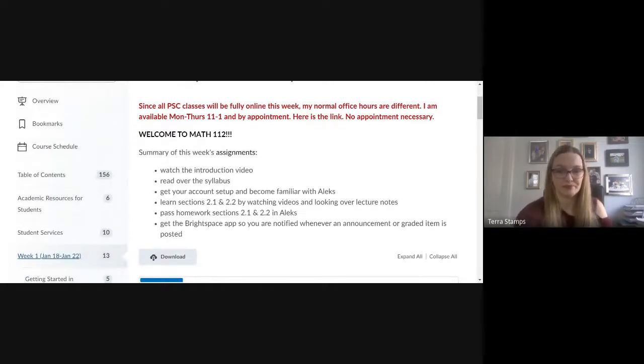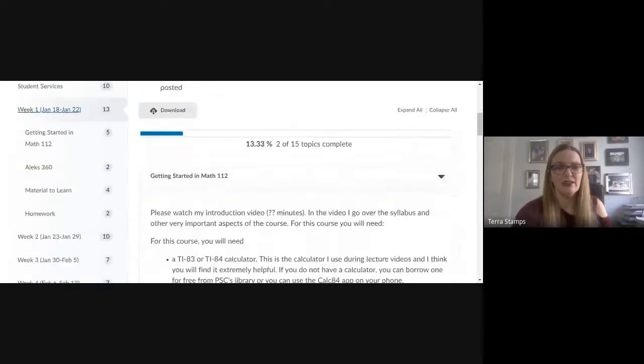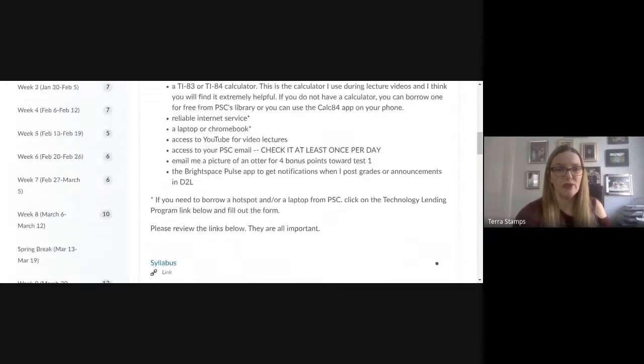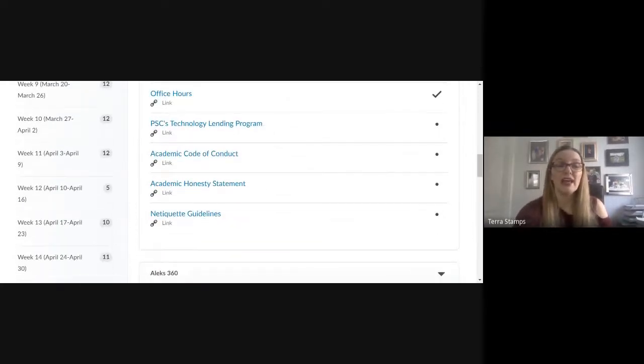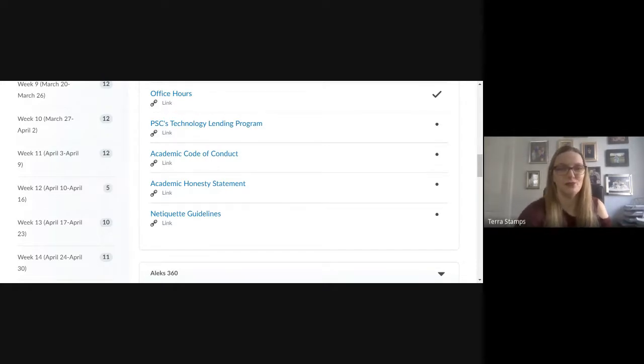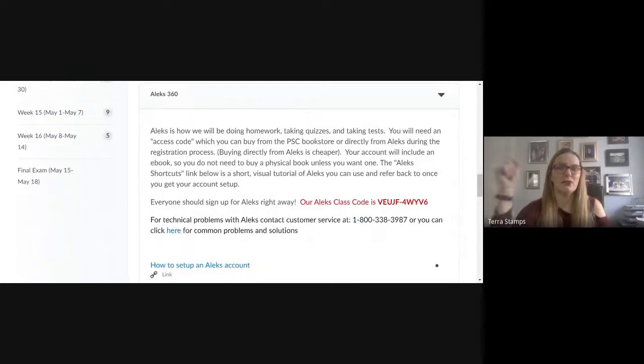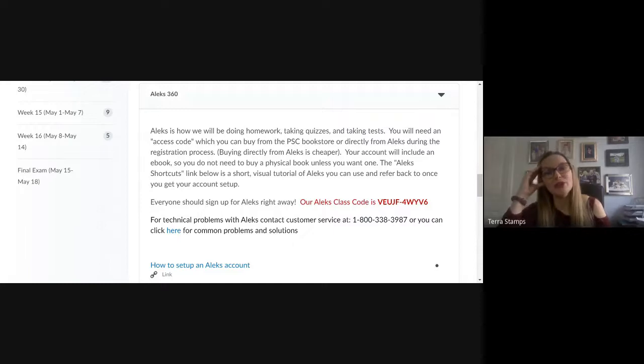So again, there's the summary, everything you need to do this week. If you scroll down, you'll see the getting started in Math 112. Make sure you read through all that stuff. The syllabus is here. My office hours, the technology lending program—that's in case you need a hotspot or a laptop or a webcam or anything like that. Prairie State can lend those out. If you need a calculator, you can contact the library and they do loan out calculators as well. So ALEKS or ALEKS 360, I think it's its formal name. That's where you're going to be doing your homework, taking quizzes and taking tests. You need ALEKS. Do not put off getting that.